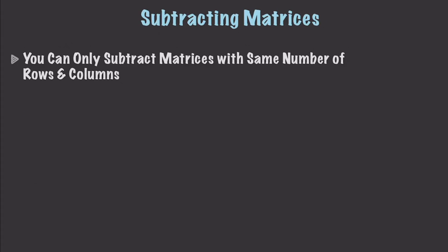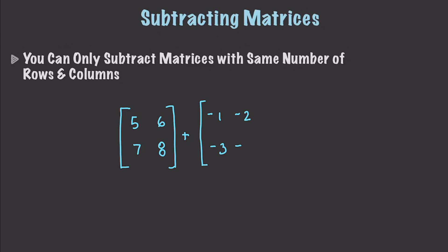Whenever you subtract matrices, you do pretty much exactly the same thing — you find the difference between the values in the corresponding positions. So let's say we have 5, 6, 7, and 8, and we want to subtract from this. One thing you can do is add instead, making the second matrix negative 1, negative 2, negative 3, and negative 4. Then you could add those values together and get values of 4, 4, 4, and 4.